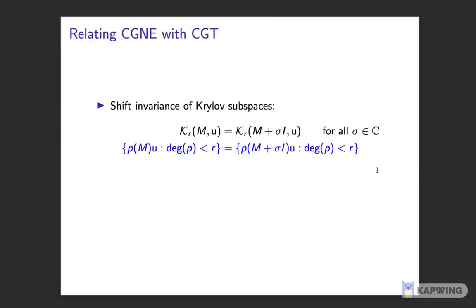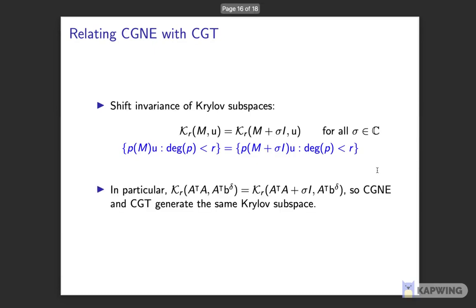Now comes the fun part, which is in finding that interesting connection. It's actually based on a nice property of Krylov subspaces, which is that they are invariant under a shift by a constant. In particular, this invariance means that CGNE and CGT generate the same Krylov subspace.